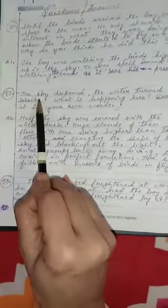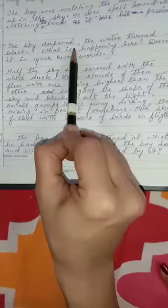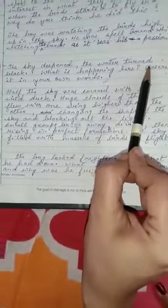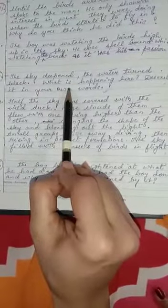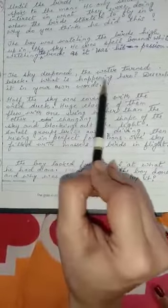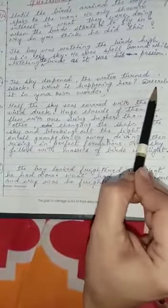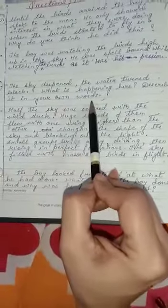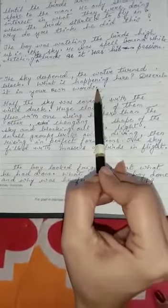Now leave a line and write the second question. The sky deepened, the water turned black. What is happening here? Describe it in your own words.